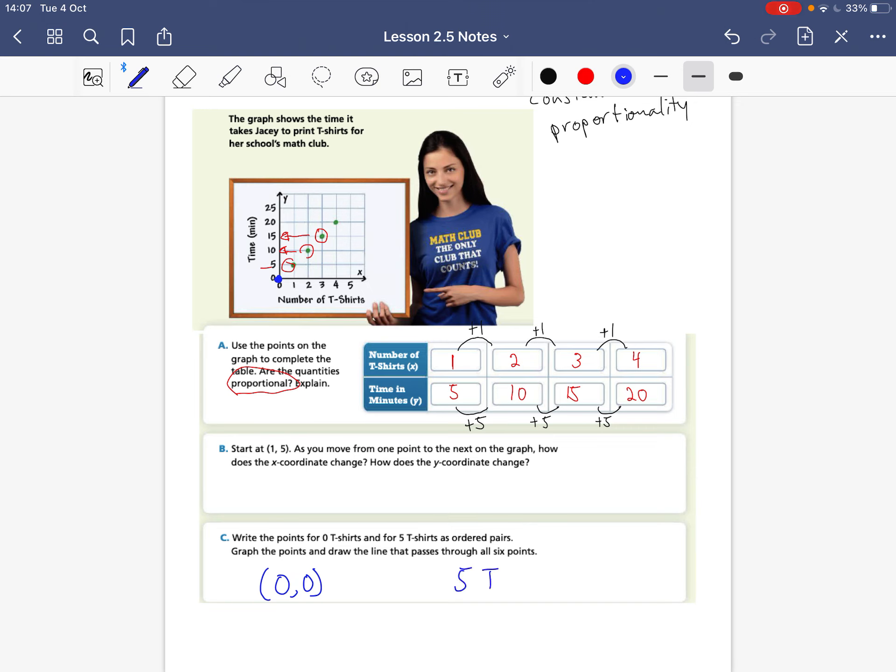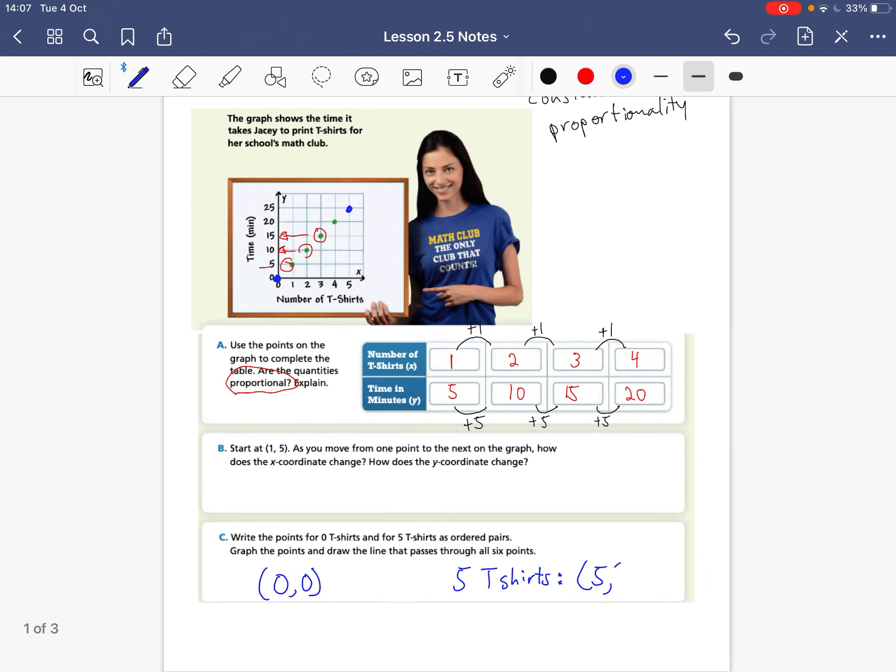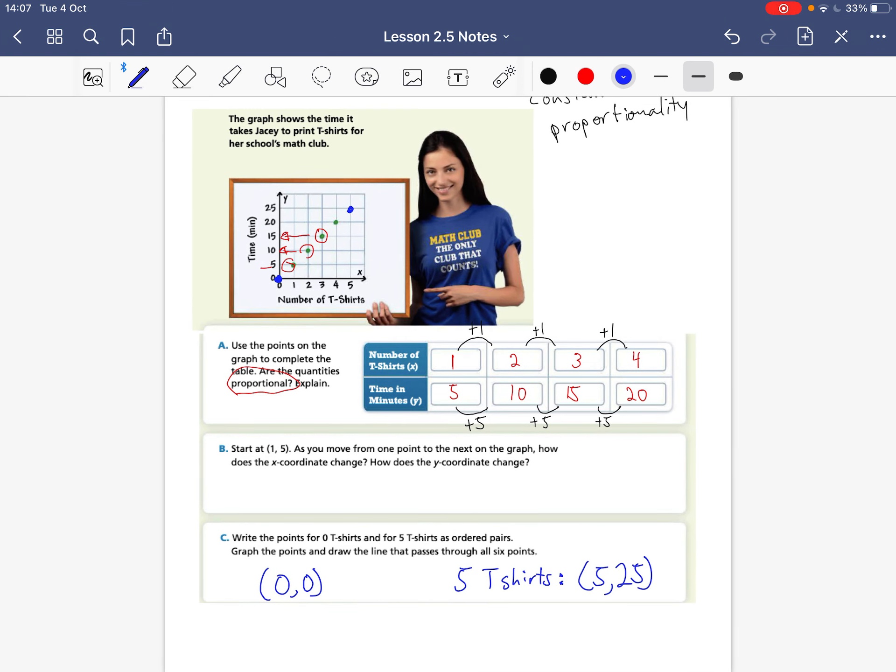And for 5 t-shirts, we can see that our ordered pair would be 5 because our x-coordinate is 5. If it is 5, most likely we could see, actually we know that it will be 25 minutes. And we can see here that this is forming a straight line.